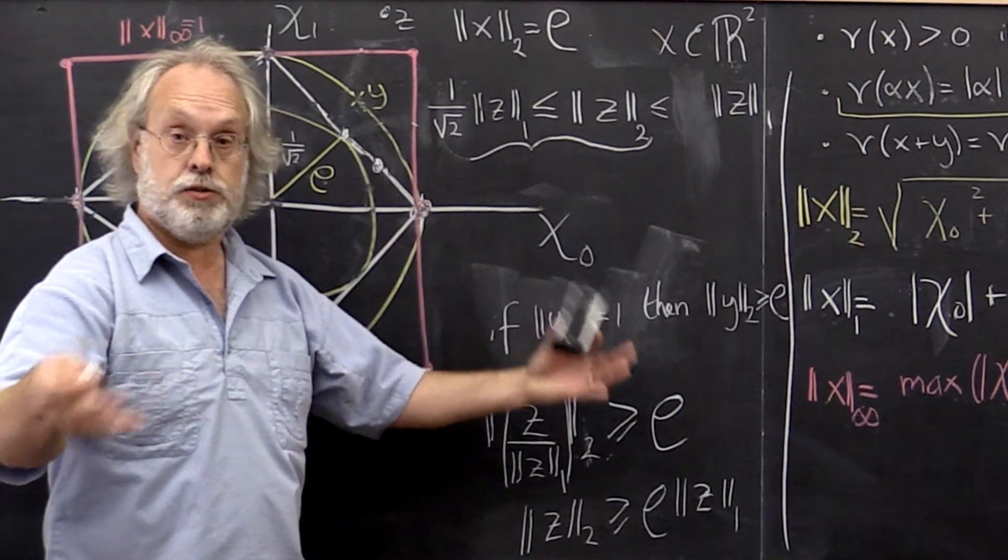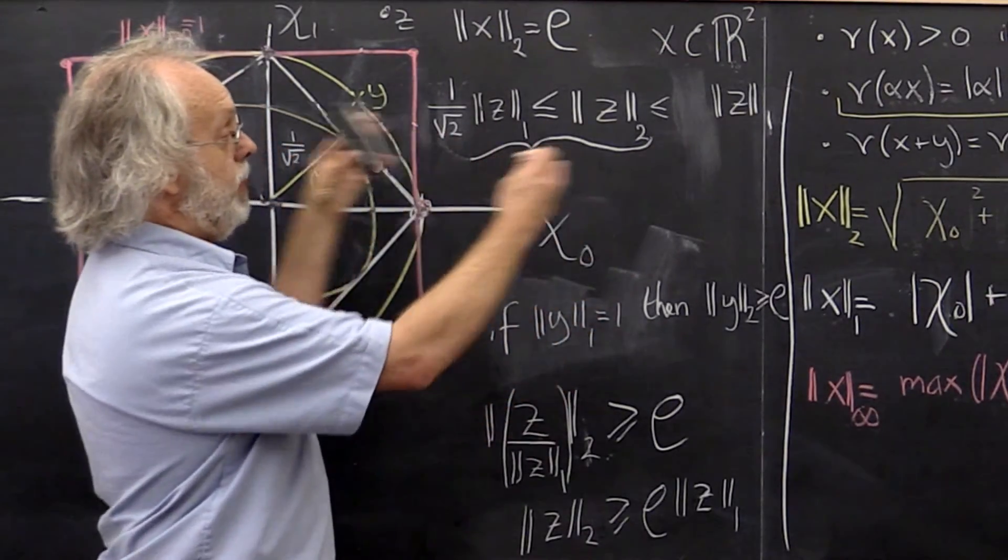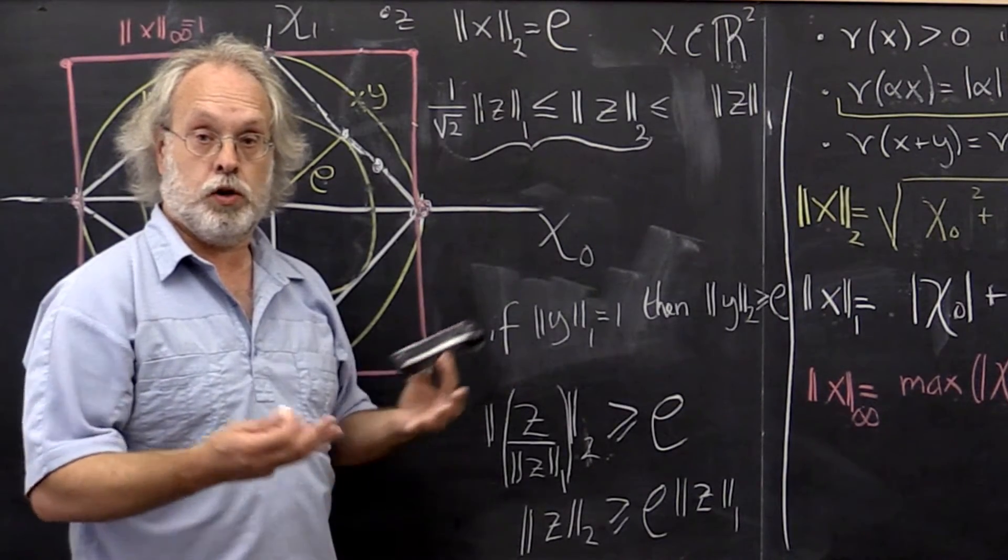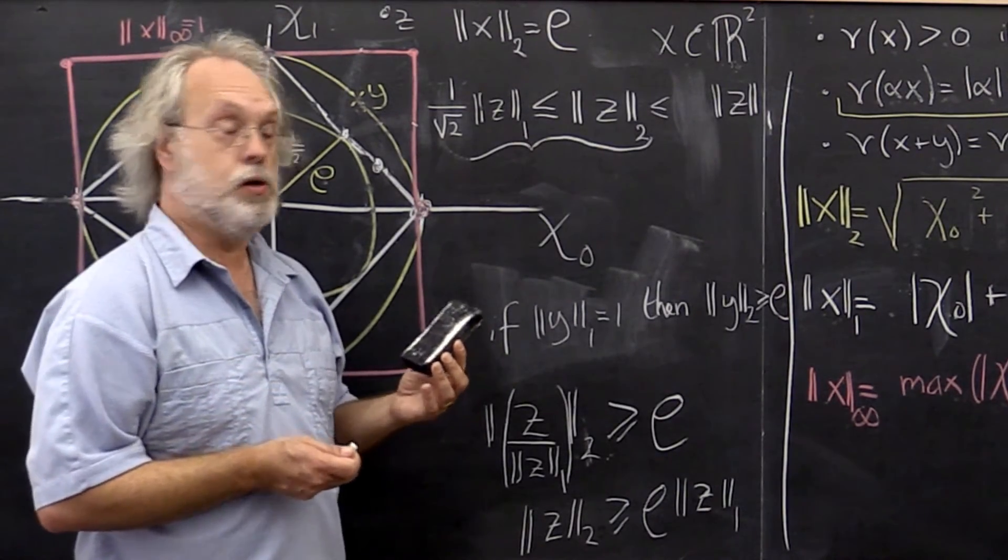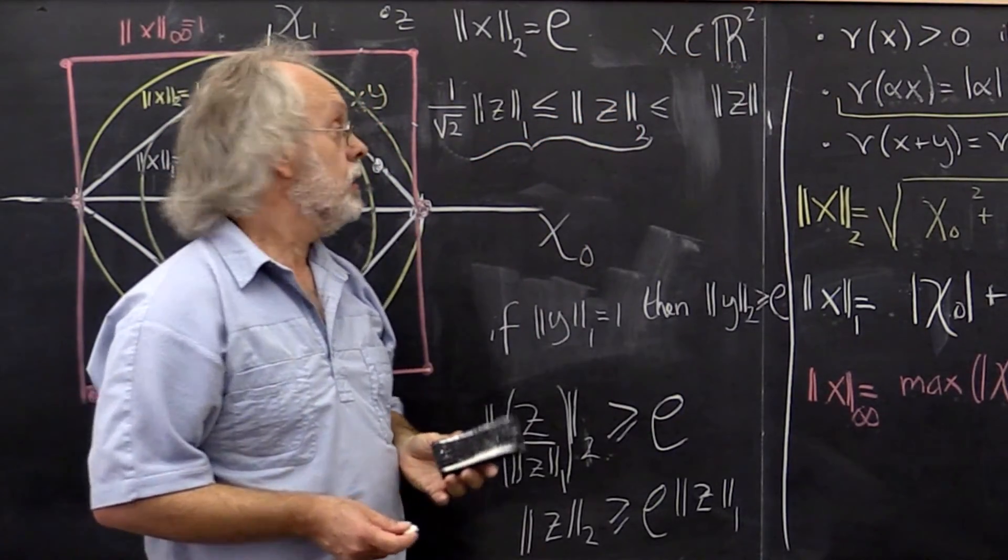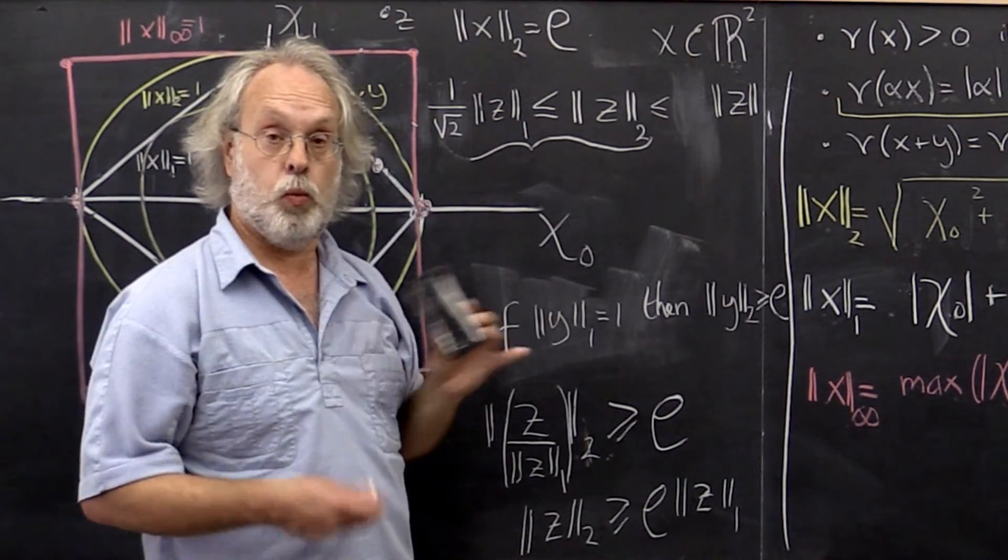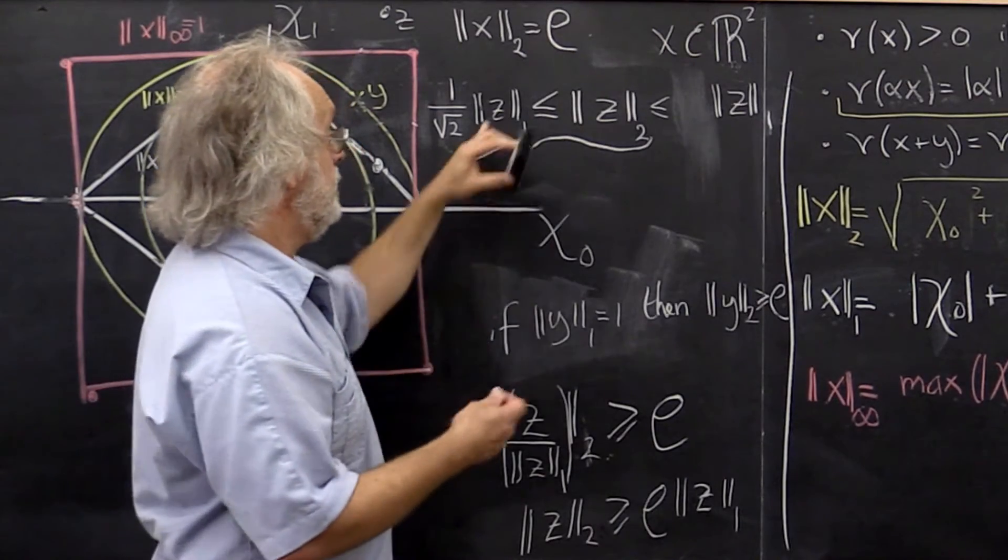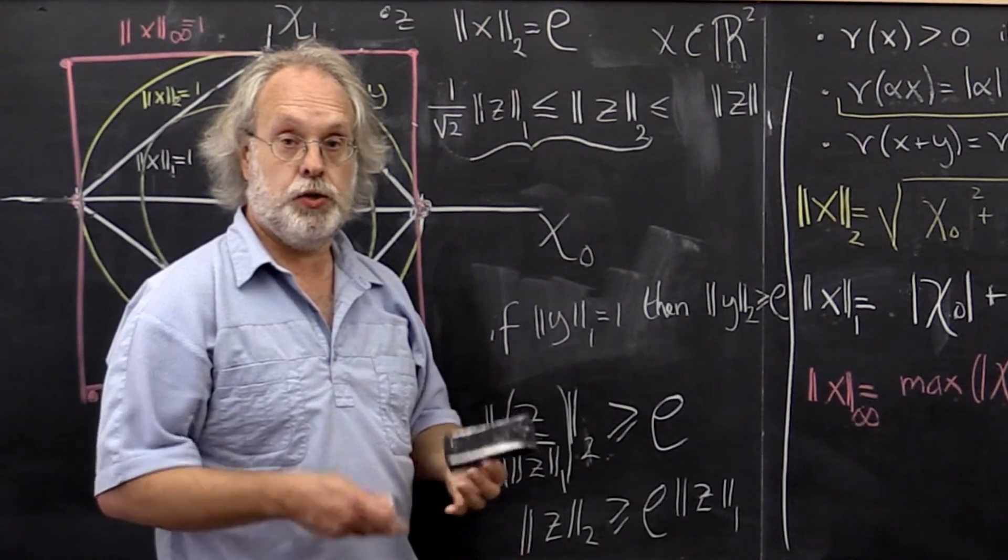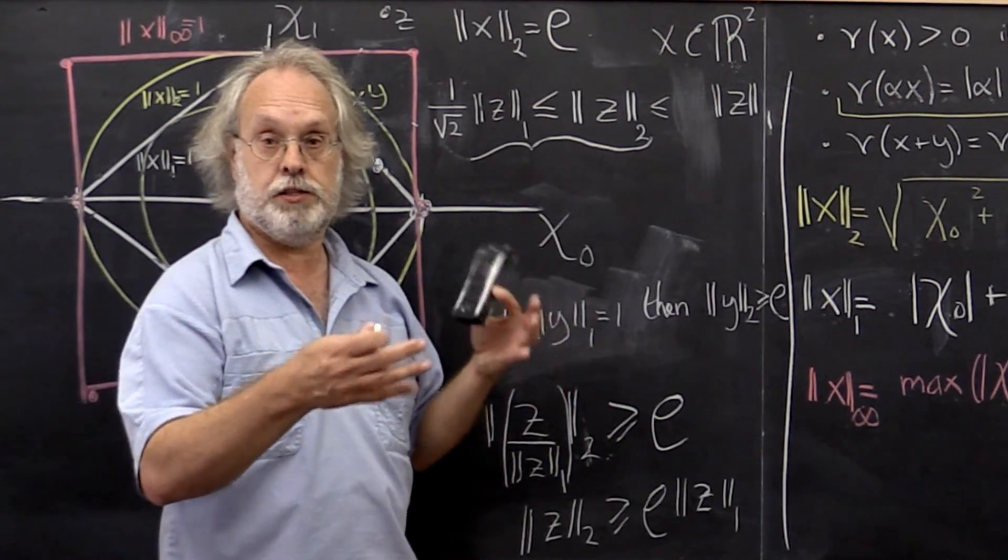And that, of course, then leads to the natural questions. What about the bounding for other norms or pairs of norms? What happens if x is in Rm? Or z is in Rm? What are the bounds? What if z is complex valued? So you're now going to do some homeworks that help you understand how all of these are related.